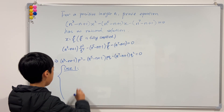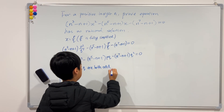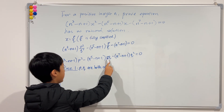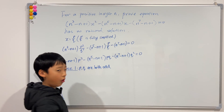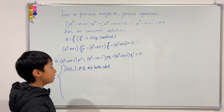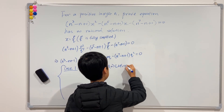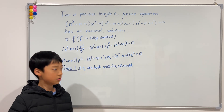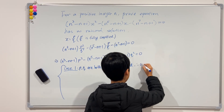So let the first valid case be p and q are both odd. If p is odd, then p squared is odd. Odd times odd is odd, and q squared is odd. We know every single one of these coefficients is odd, so every single one of these three terms is odd. Odd plus odd plus odd is odd, so the left-hand side is odd. But the right-hand side is 0, and 0 is an even number. Odd cannot equal even, so we have a contradiction.